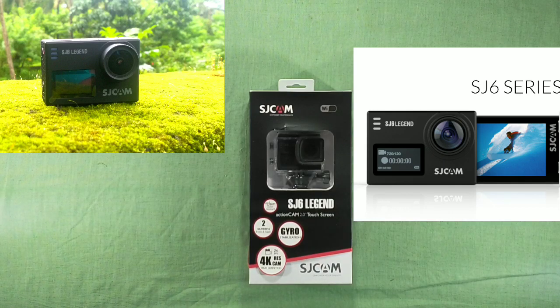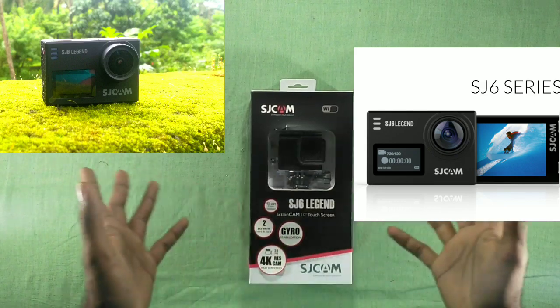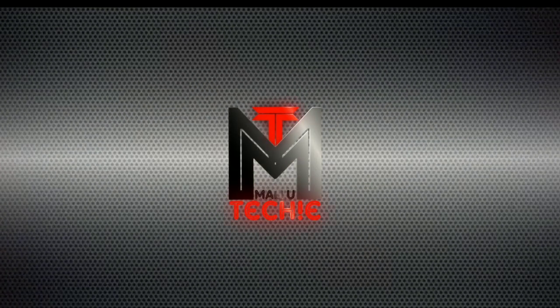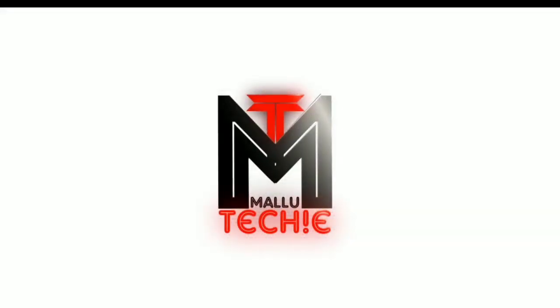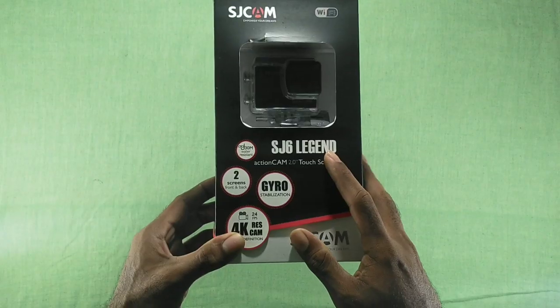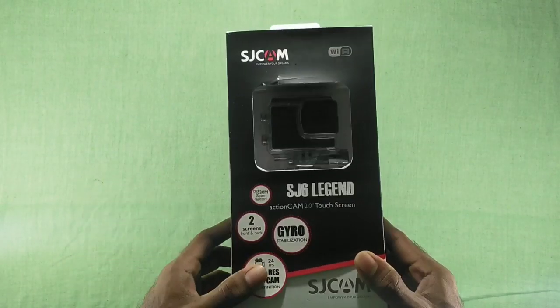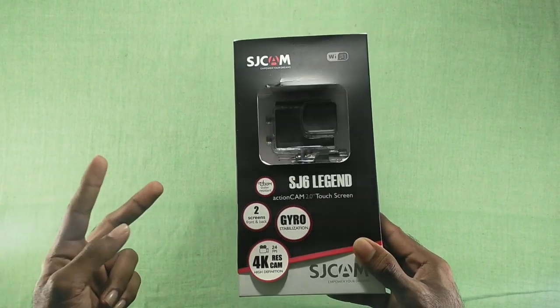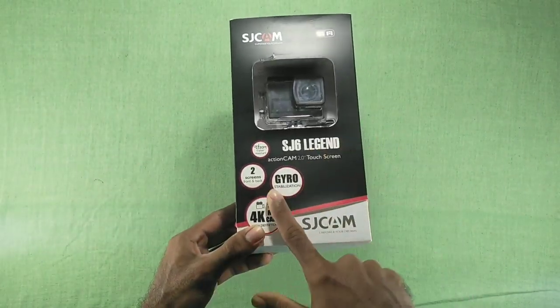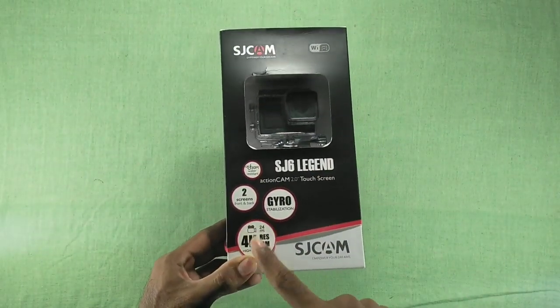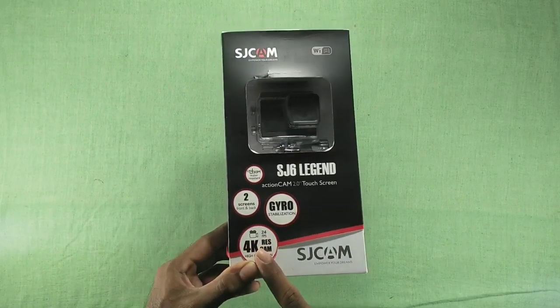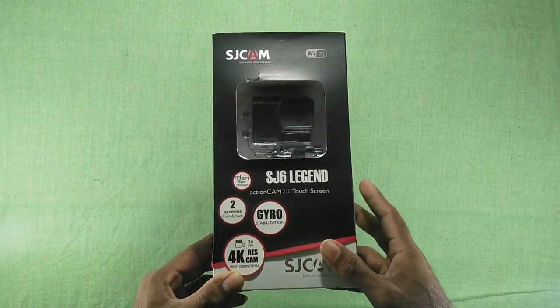So let's get started. As we can see from the box itself, this camera's got two displays—one in the front and one in the back—gyro stabilization for better video stabilization, and it also supports 4K video resolution at 24 frames per second, which is a very good frame rate for a low-budget action camera for beginners.